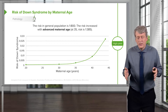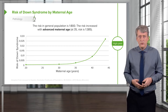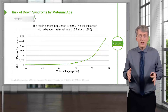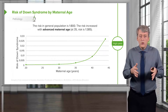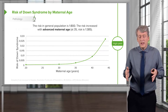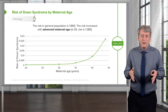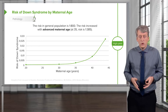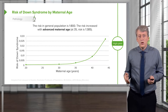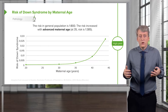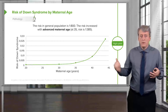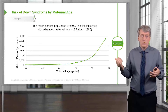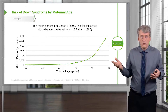Now let's look at risks for Down syndrome. The biggest risk factor to consider is maternal age. As women get older, it becomes more and more likely for them to create eggs with an extra copy of chromosome 21. We generally consider age 35 a point at which the risk starts to really increase, and after 40 it rises dramatically, as you can see in the risk chart here.